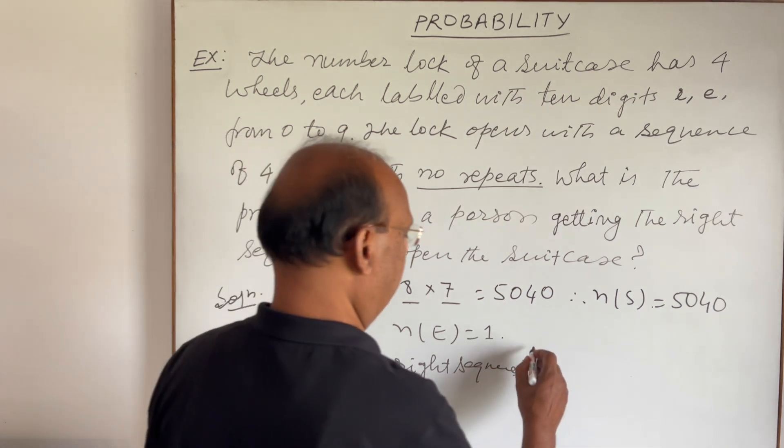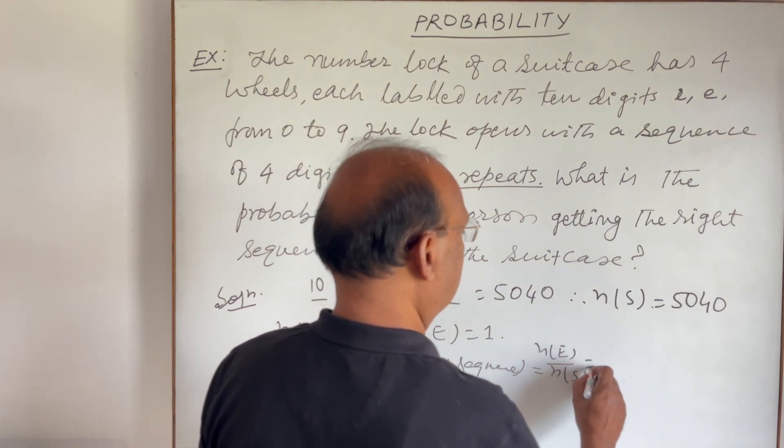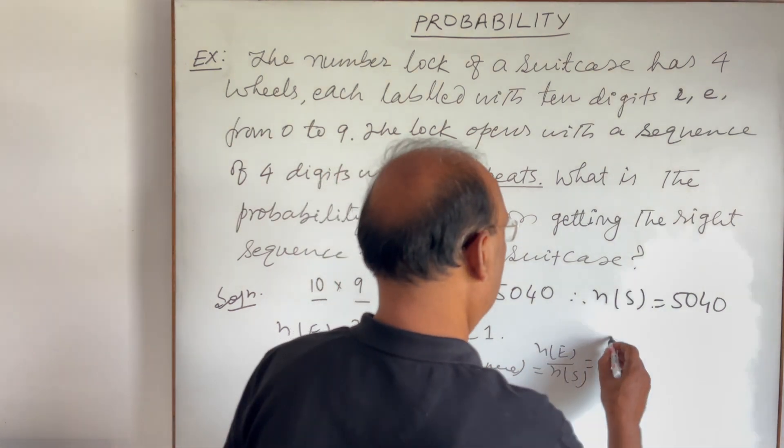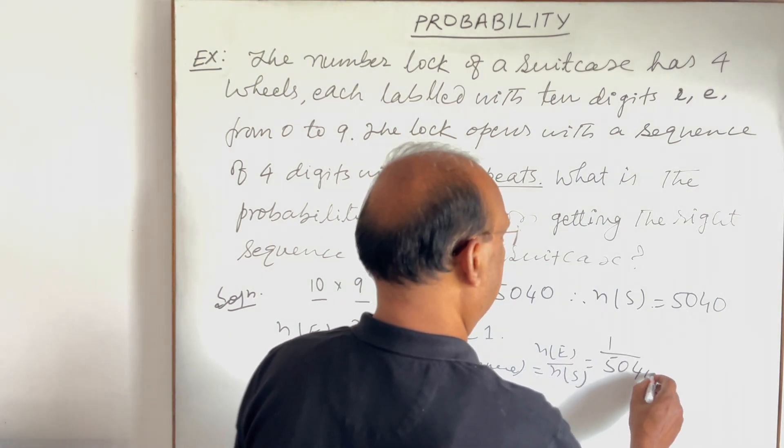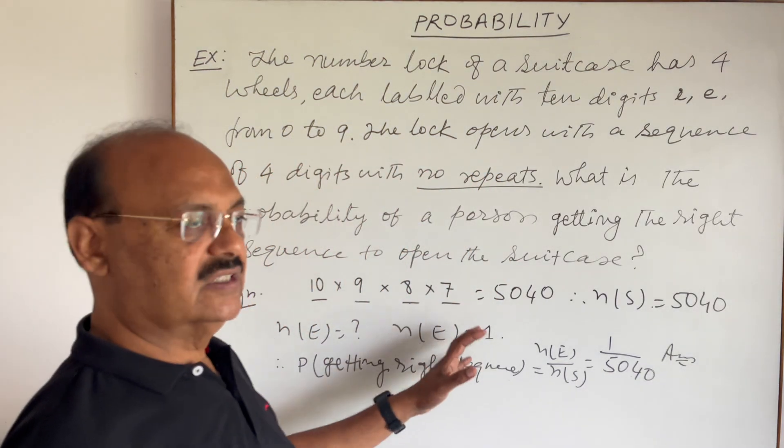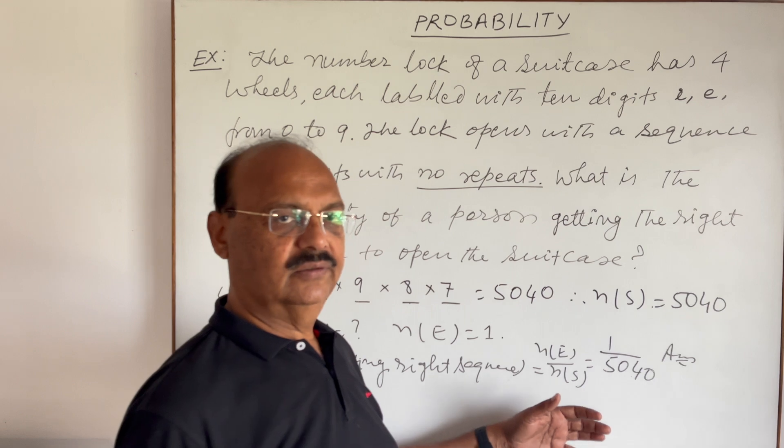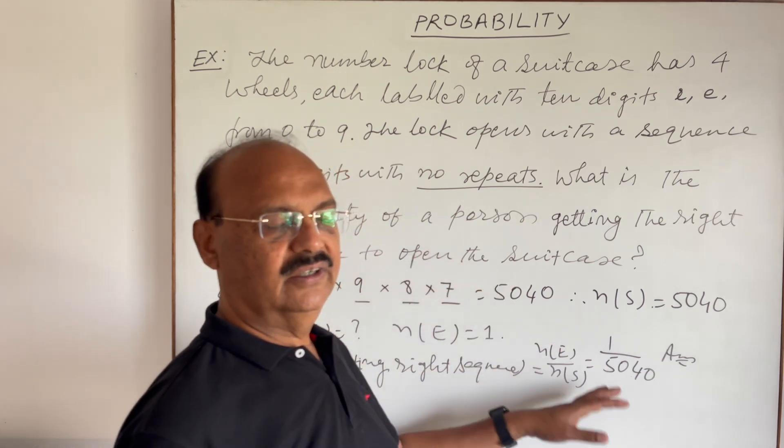n(E) is here 1 and n(S) is 5040. So this is the probability that the sequence is okay, sequence is right, correct, and the suitcase will open.